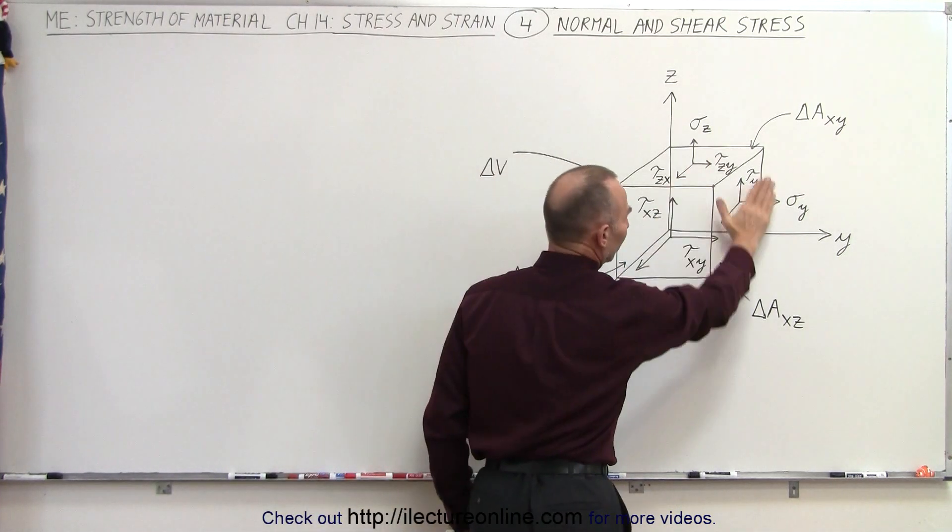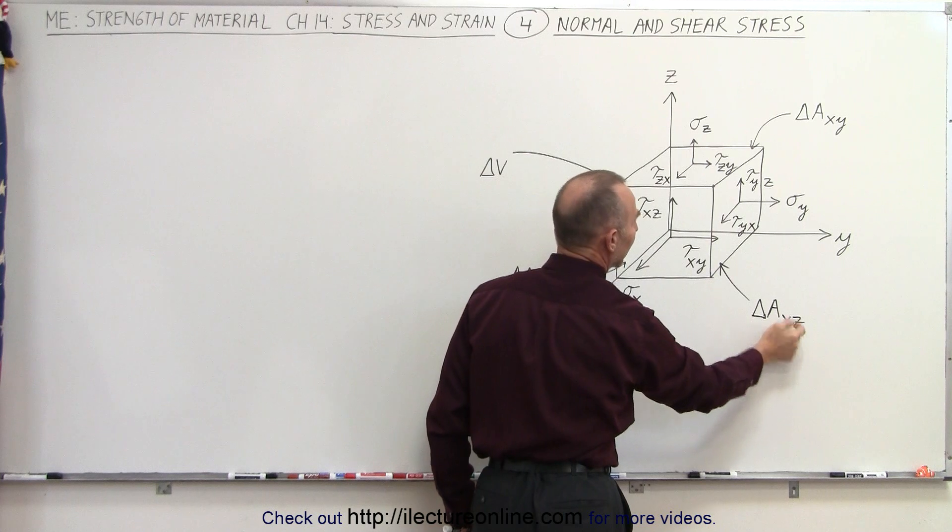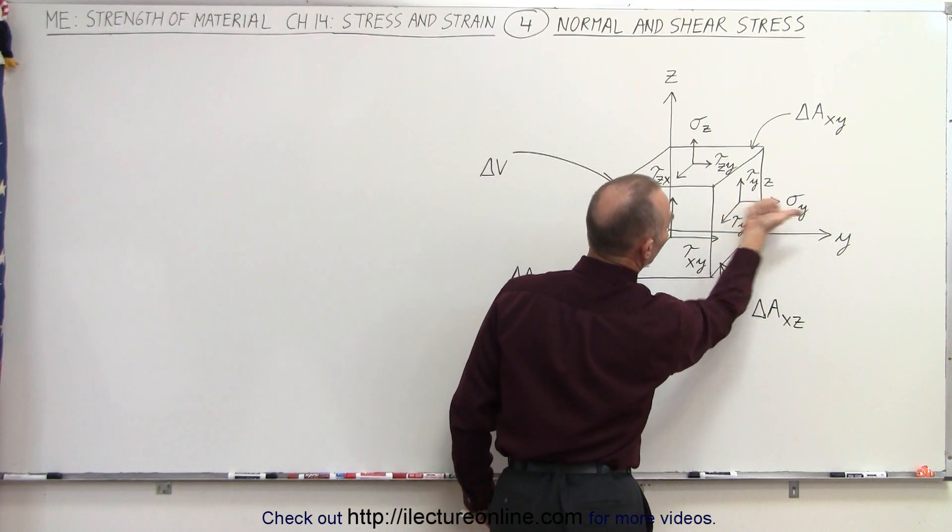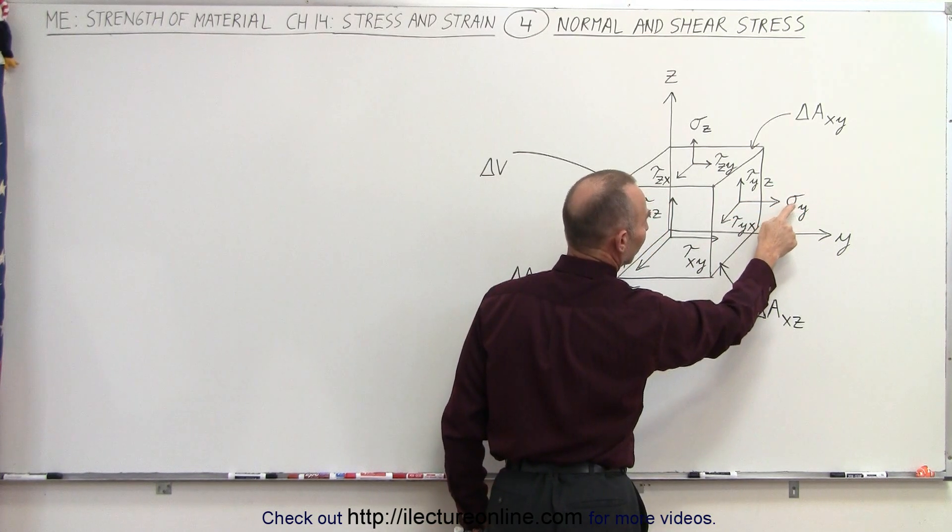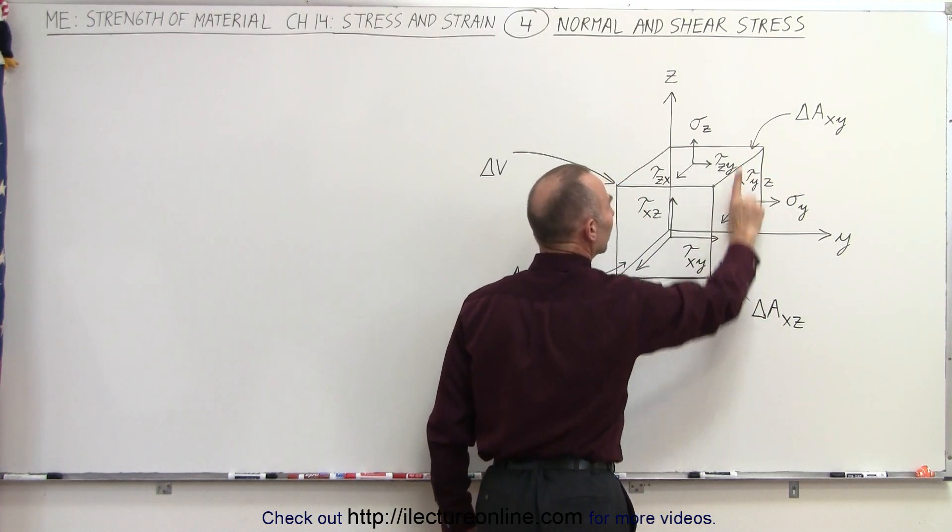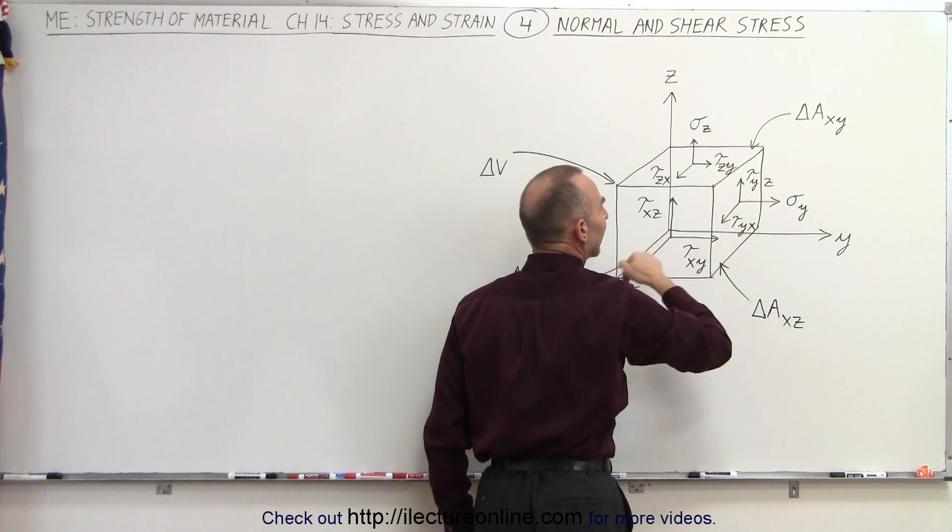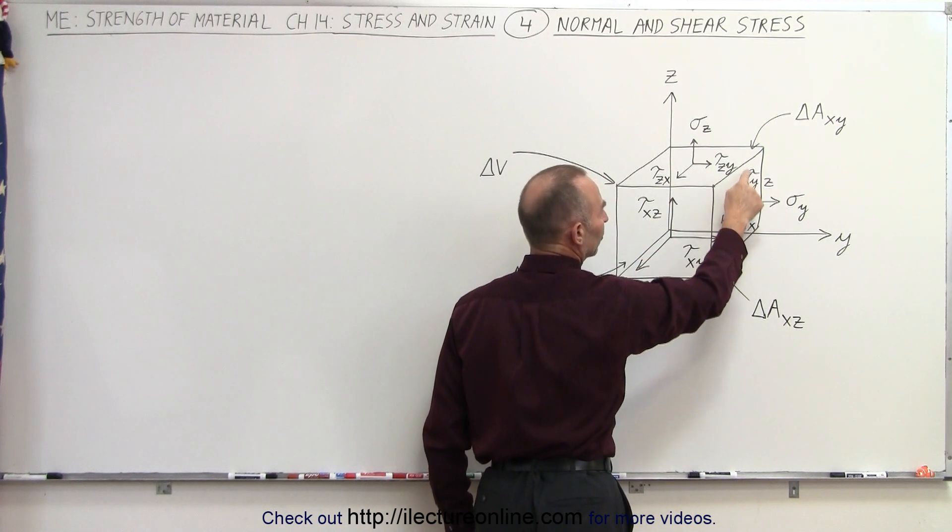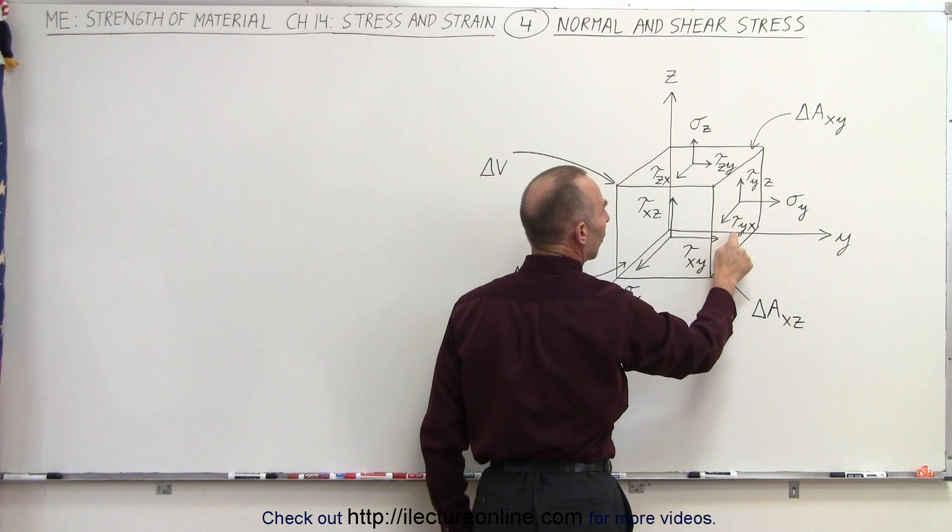If we now look at the side surface right here in the xz plane, we have the normal stress pointing in the y direction. There we have sigma sub y. And then we have the two shear stresses, one pointing in the z direction, one pointing in the x direction, and so the subscripts are tau yz and tau yx.